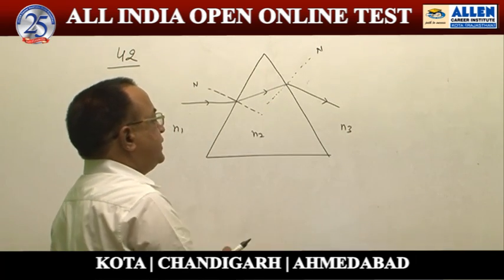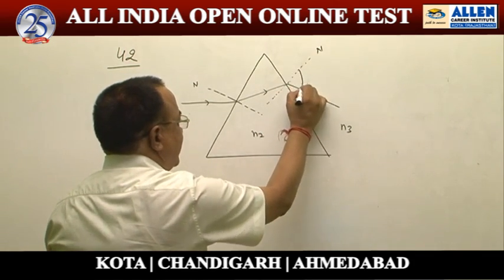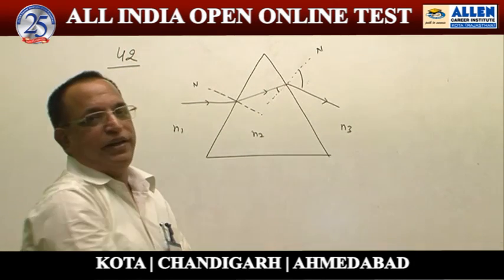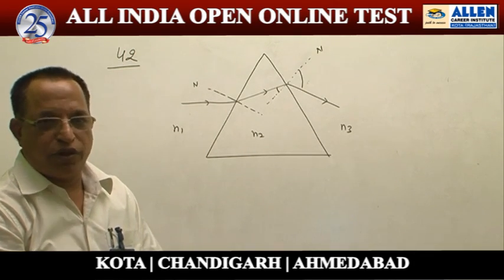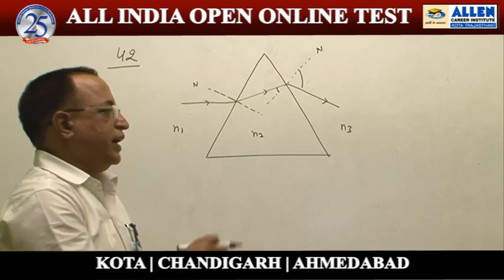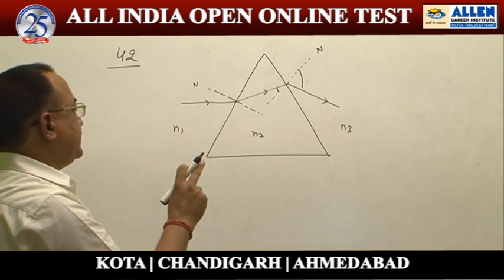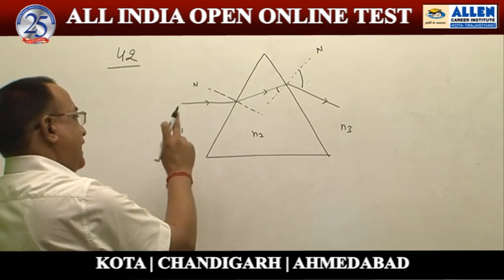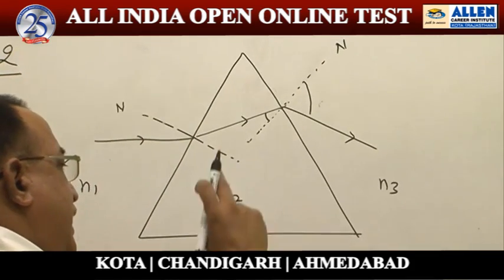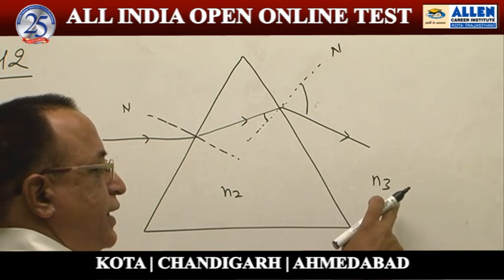Now, in this diagram we can see again that this ray is moving away from the normal, because this angle is more than the other angle. So here again we can say this light is going into a rarer medium. We can say N3 is less than N2. So, in sequence: N2 is less than N1 as this ray is moving away from the normal, and N3 is less than N2 as this ray is also moving away from the normal. So N3 is minimal.